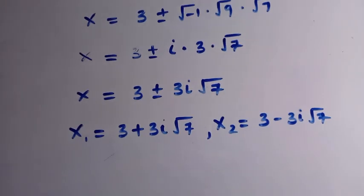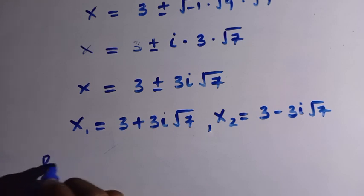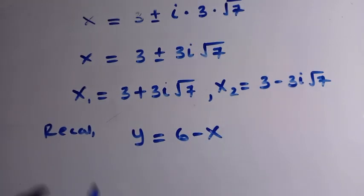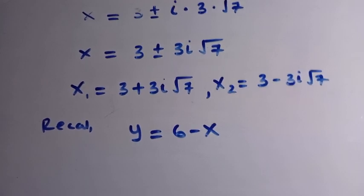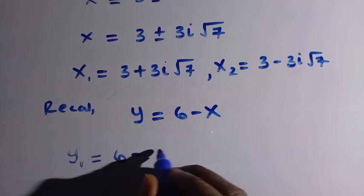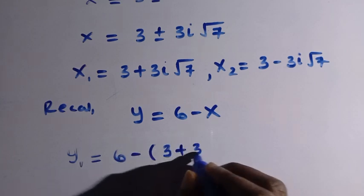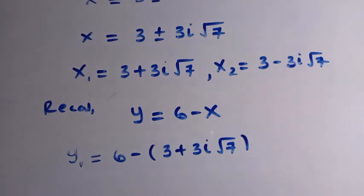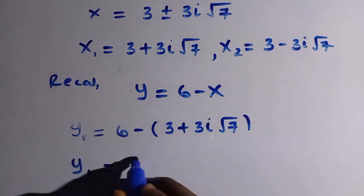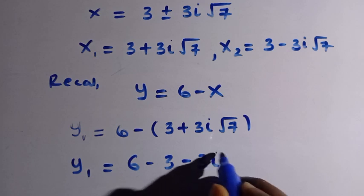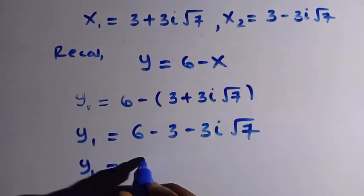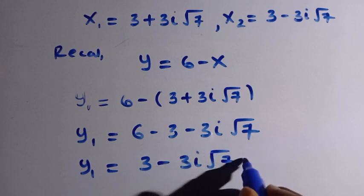These are the two values of x. We now recall that y equals 6 minus x. For y₁, we substitute x₁ equals 3 plus 3i root 7. So y₁ equals 6 minus (3 plus 3i root 7), which gives y₁ equals 6 minus 3 minus 3i root 7, therefore y₁ equals 3 minus 3i root 7.